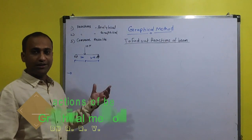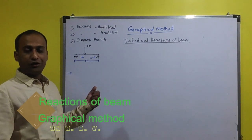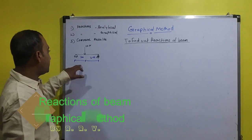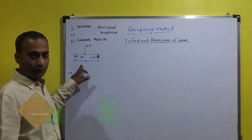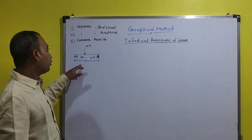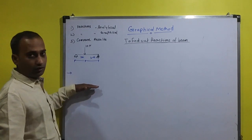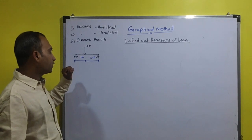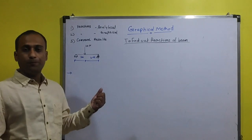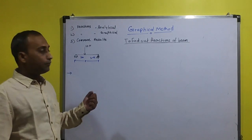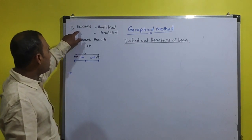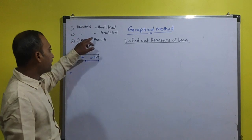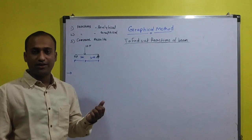Hello everyone. Today we will study calculation of reactions by graphical method. Let's consider a given beam problem. We have to draw the space diagram according to this beam. First of all, we will calculate reactions by analytical method, then calculate reactions by graphical method, and we will compare the results.